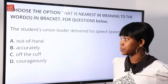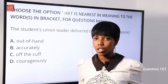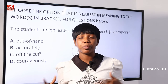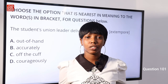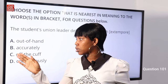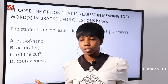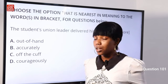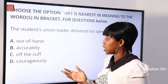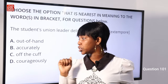Question 101: 'The student union leader delivered a speech extemporary.' Options: A) out of hand, B) accurately, C) off the cuff, D) courageously. 'Extemporary' means to do something without preparation. 'Out of hand' means not under control. 'Accurately' means something done well. 'Off the cuff' means without preparation. 'Courageously' means bravely. The nearest in meaning to extemporary is 'off the cuff.' Option C is the correct answer.